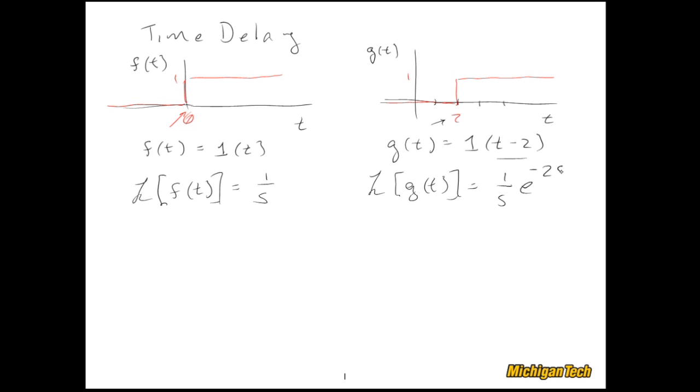Now one way to describe how the time delay property works is if you're taking the Laplace transform of some function that's delayed in time by capital tau seconds, then you take the Laplace transform of the undelayed function and just multiply it by e^(-tau*s).